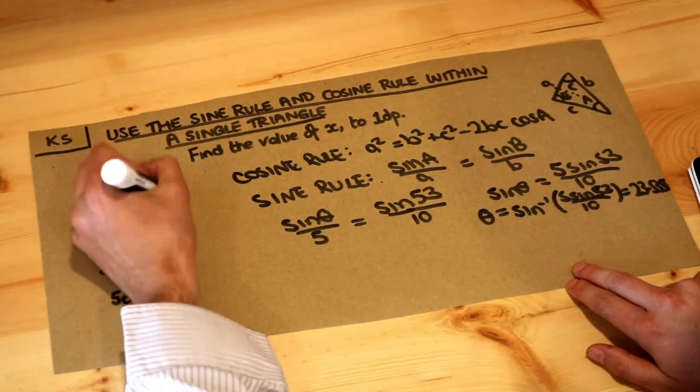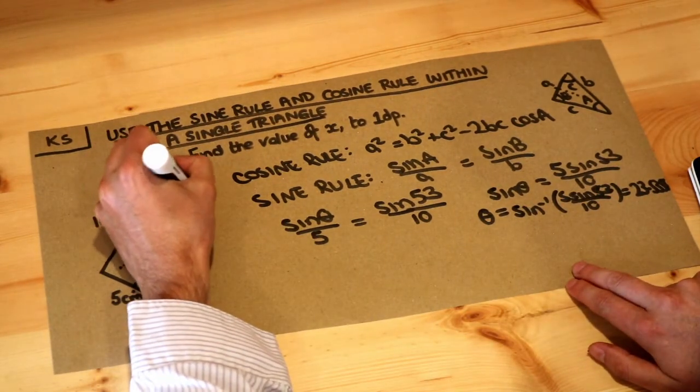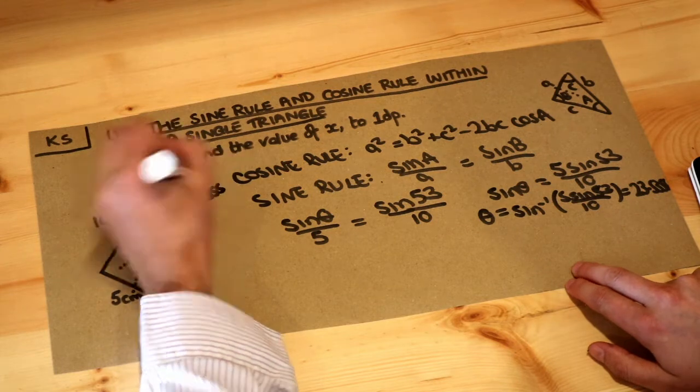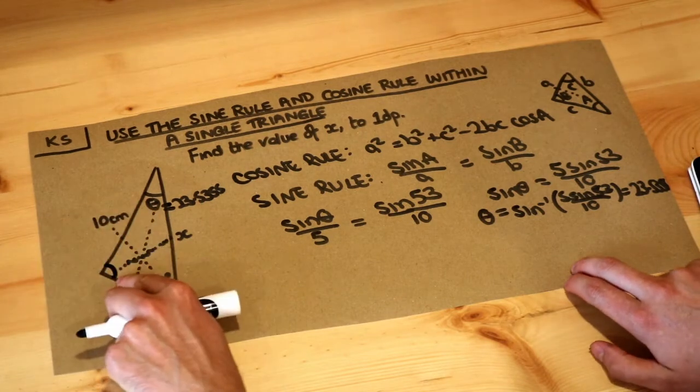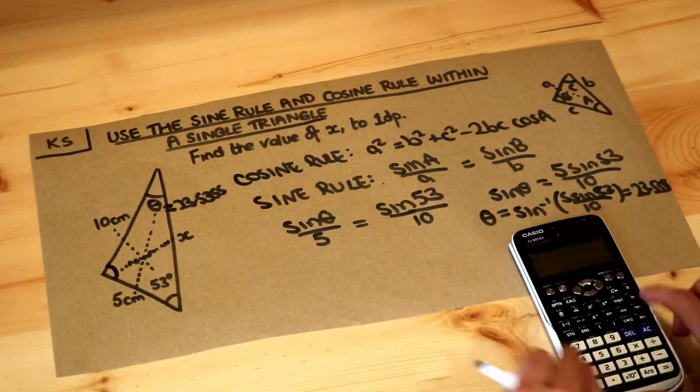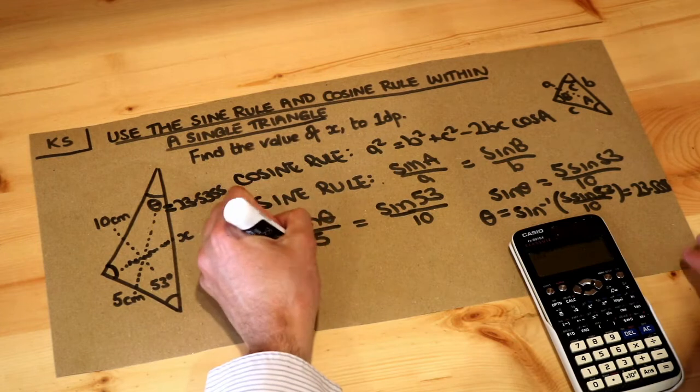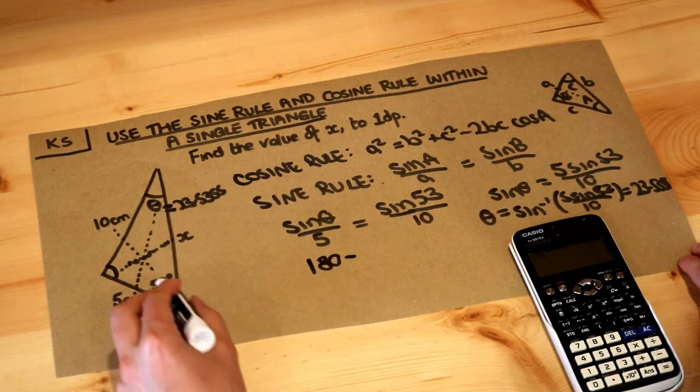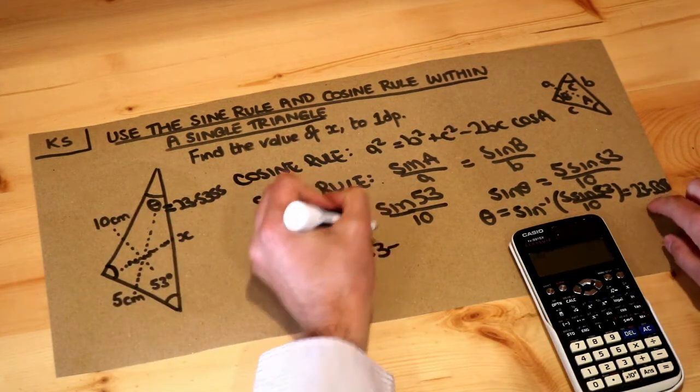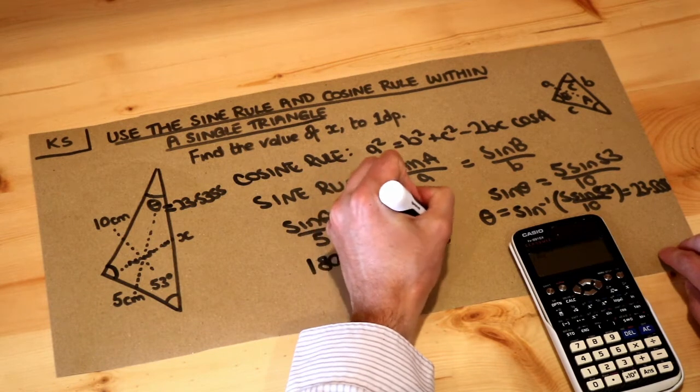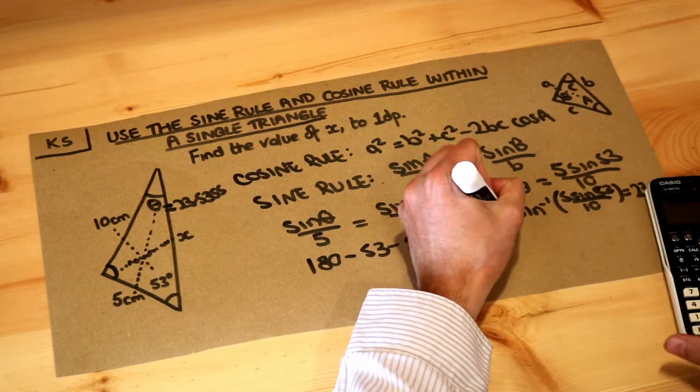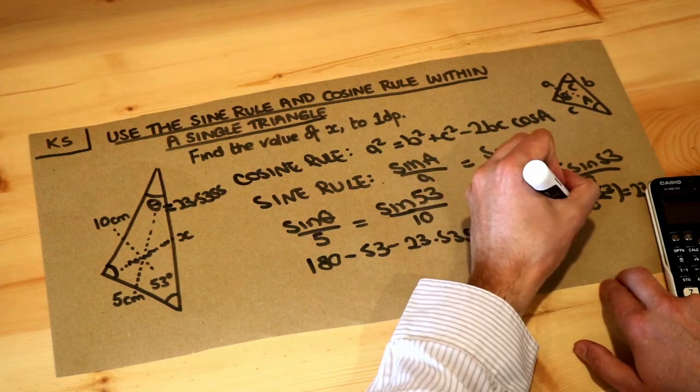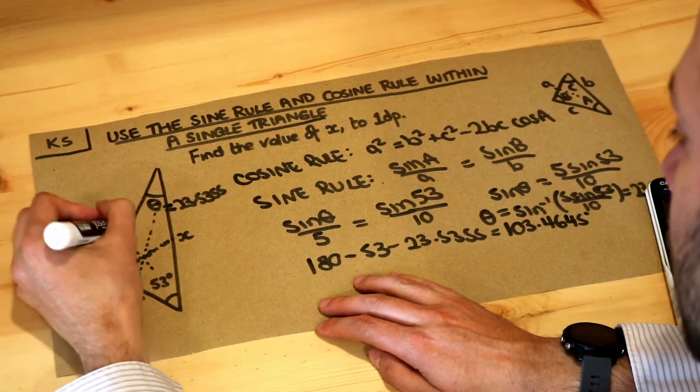If I put that angle in here, this angle is 23.5355 degrees. Because I know this angle and this angle, I can easily find this remaining angle here. I just need to do 180 minus the 53 minus my answer here, and that will give me the remaining angle. That gives 103.4645 degrees. That's our angle here.